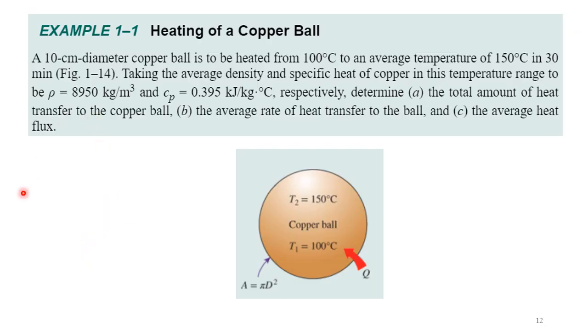So let's look at the first example of the textbook. He has a 10 centimeter diameter copper ball. It's heated from 100 degrees C to an average temperature of 150 degrees C in 30 minutes. Taking the average density and specific heat of copper to be 8950 kilograms per cubic meter and CP is 0.395 kilojoules per kilogram degree C. We want to find the total amount of heat transferred to the copper ball and the average rate of heat transferred to the ball and the average heat flux. So you're really going to have to commit these terms to memory because you got three different terms: the total amount of heat, the average rate of heat transfer and the average heat flux. So you have to know the differences between those.